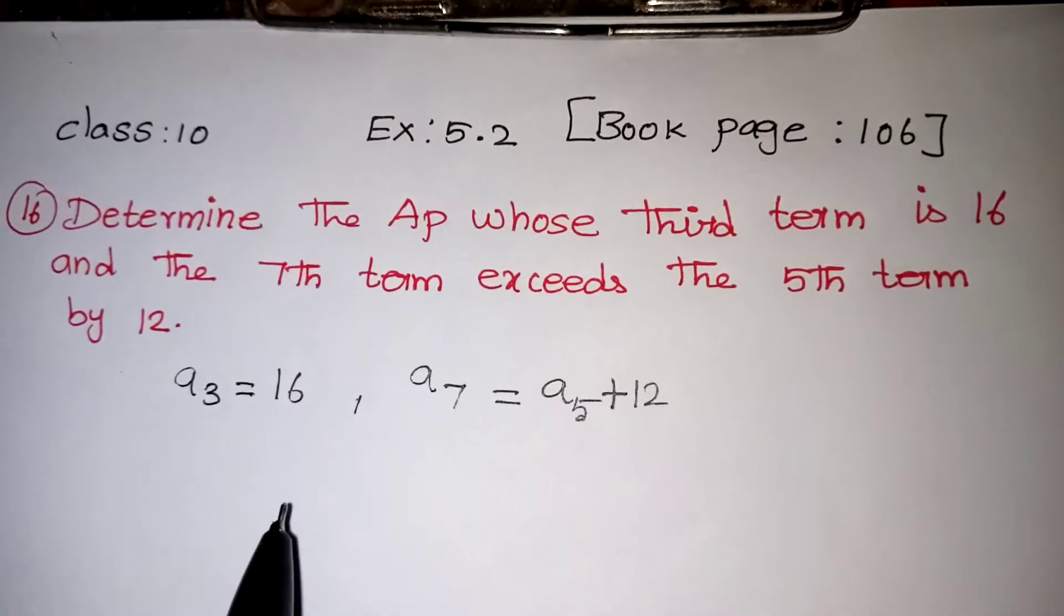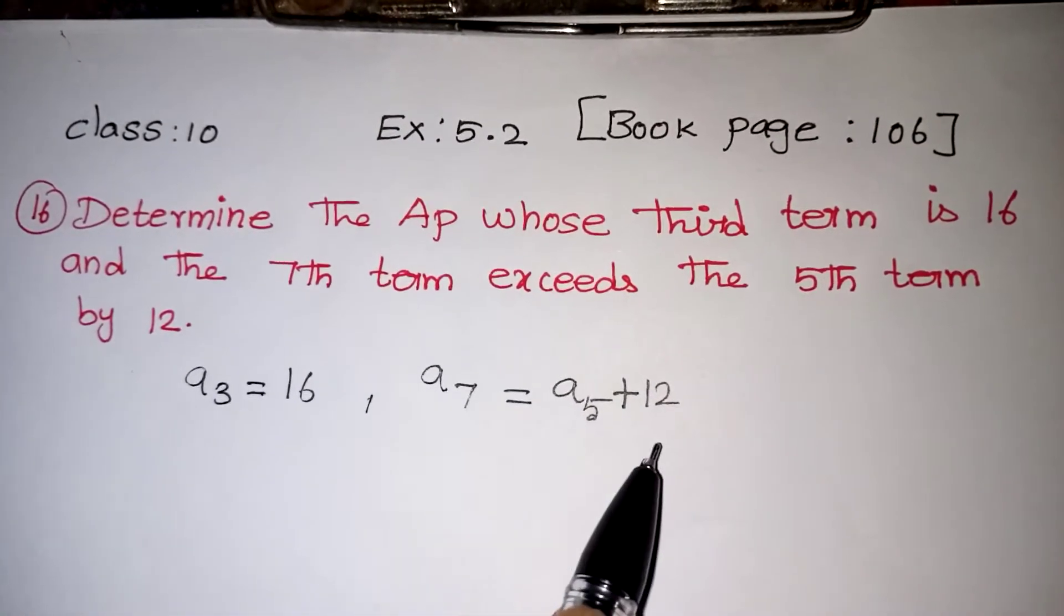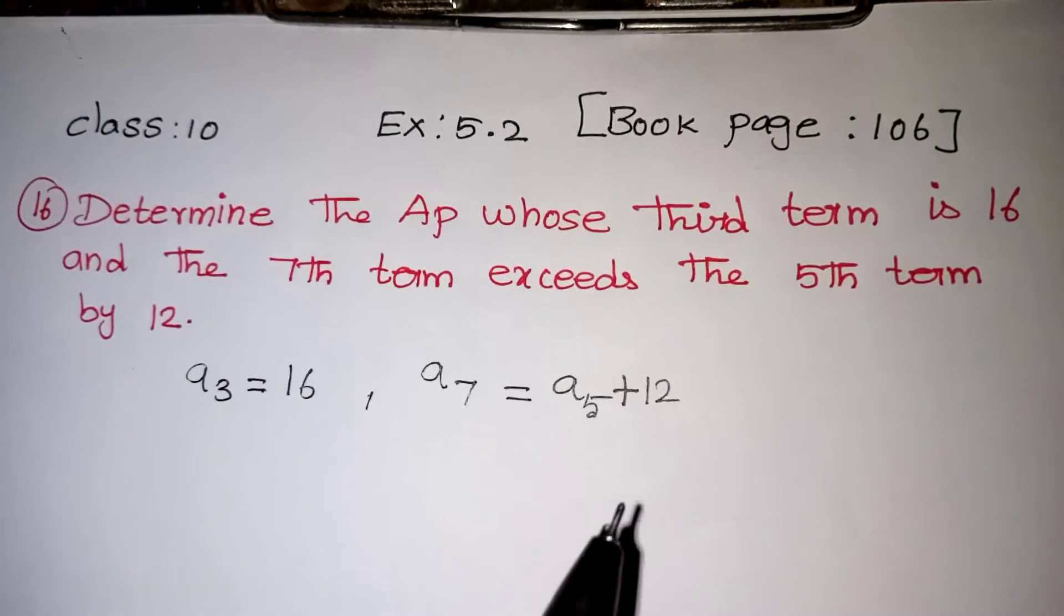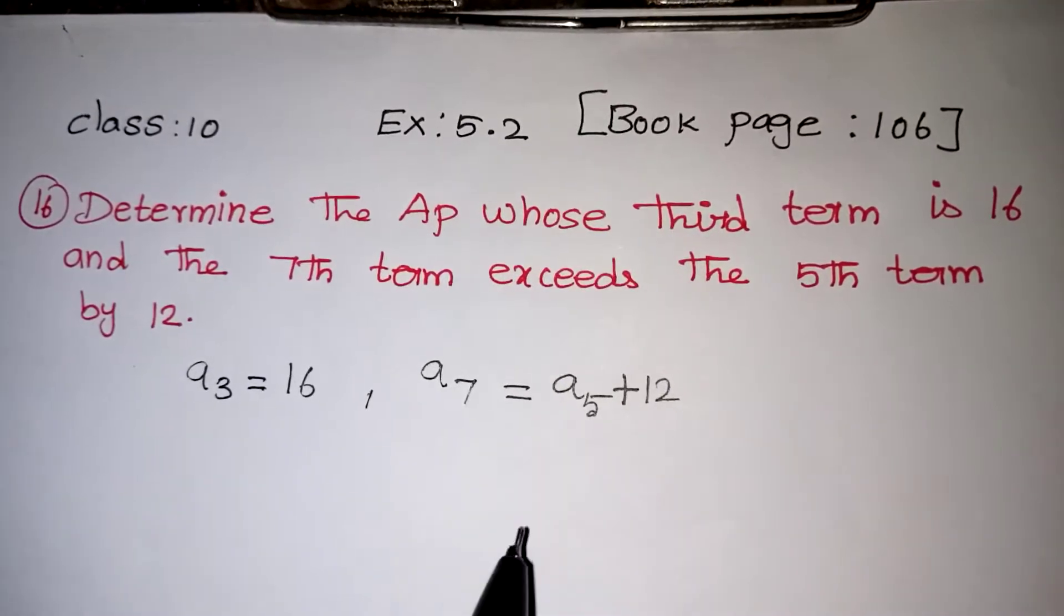So A₃ is 16, A₇ is equal to A₅ plus 12, that is the given question. Now our aim is to find what is A, what is D.